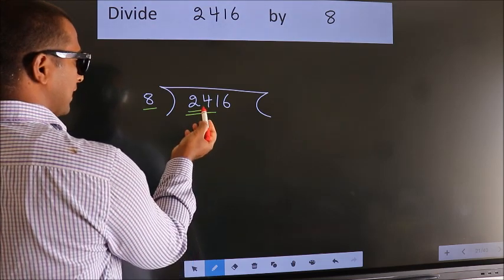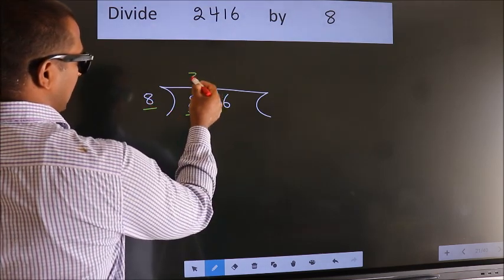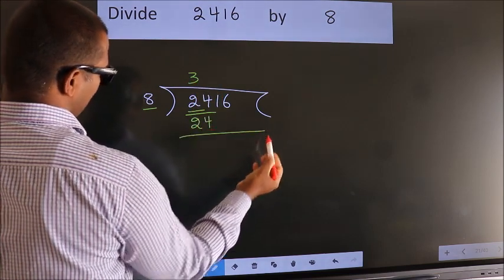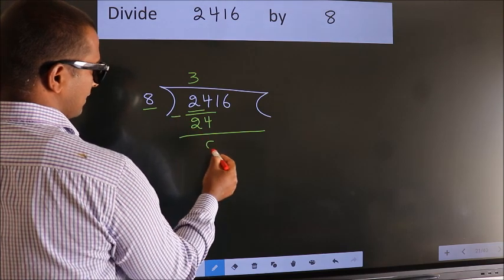When do we get 24? In the 8 table: 8 times 3 is 24. Now we subtract and get 0.